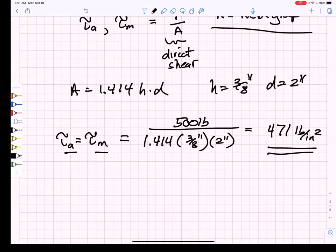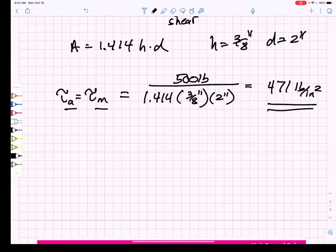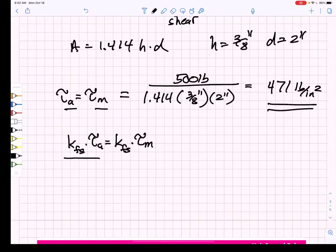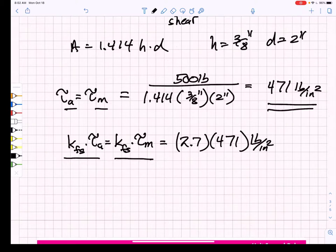Our stress amplitude and our mean stresses are the same, but now we're going to multiply those by a fatigue stress concentration factor. KFS tau A is equal to KFS tau M, which is equal to 2.7 times 471 pound per square inch, which gives me 1.27 kilopounds per square inch.